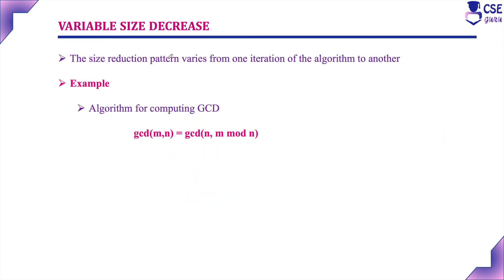The next variant is variable size decrease. Here the size reduction pattern varies from one iteration to another — not by a constant value or a constant factor, but a new value each iteration. For example, the algorithm for computing GCD: GCD(m, n) = GCD(n, m mod n). We take n and m mod n, and this changes in each iteration — every iteration it is reduced according to the modulus value. This algorithm has already been discussed in the first module; a link will be provided in the description.